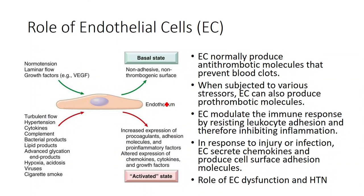In this portion we'll talk about the role of endothelial cells. Your endothelium are particularly important because if they're healthy, they produce antithrombotic molecules that prevent blood clots — they basically act as bumpers against many harmful things that can happen to the arterial system. However, when subjected to various stressors like hypercholesterolemia or inflammation, they can start becoming prothrombotic, entering an activated state.